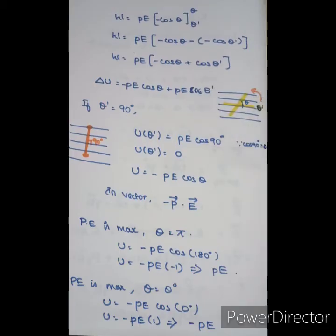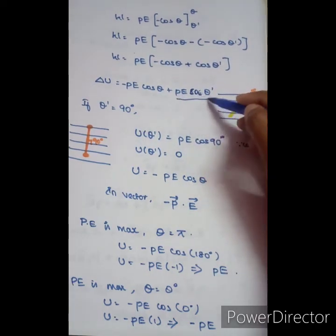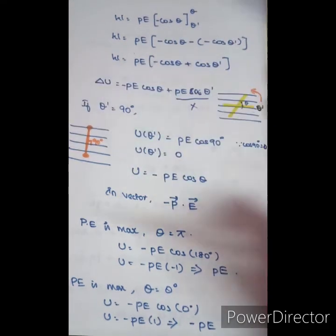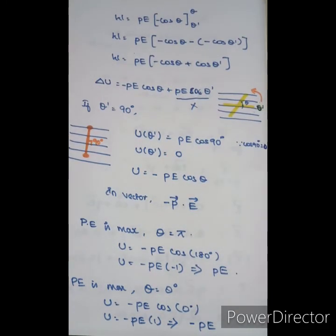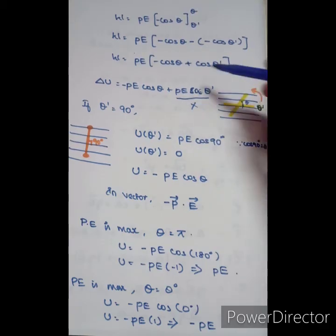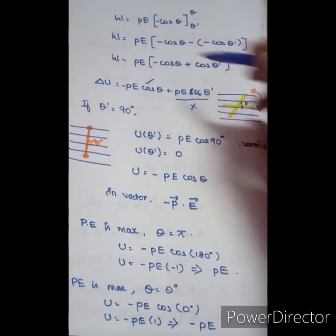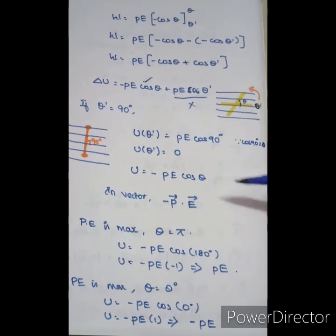With the reference potential energy set to zero at 90 degrees, I have the change in potential energy. So the potential energy at angle theta is U equals minus PE cos theta. In vector form, this is U equals minus P vector dot E vector.